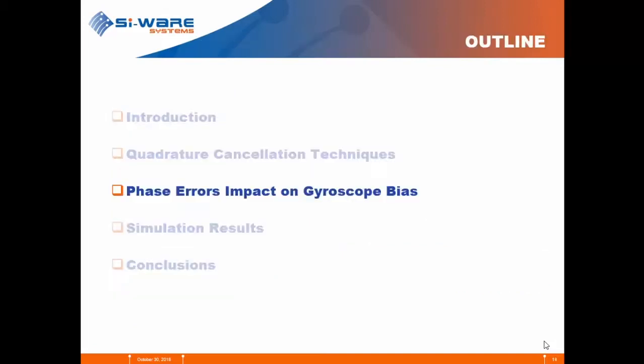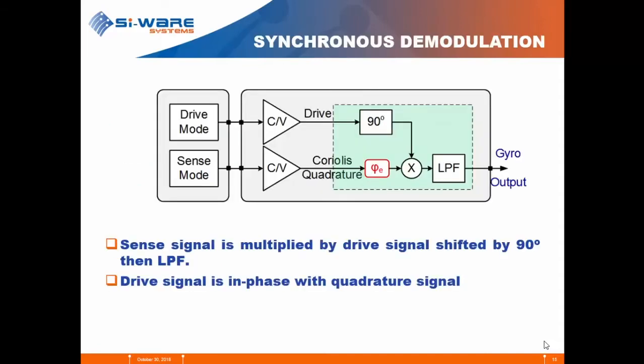We will now discuss each of these three methods and the phase error impact on the gyroscope bias for each one. Starting with the first method — synchronous demodulation — the sense signal is simply multiplied by the drive signal shifted by 90 degrees and then low-pass filtered to get the gyro output. The drive signal is in phase with the quadrature signal.